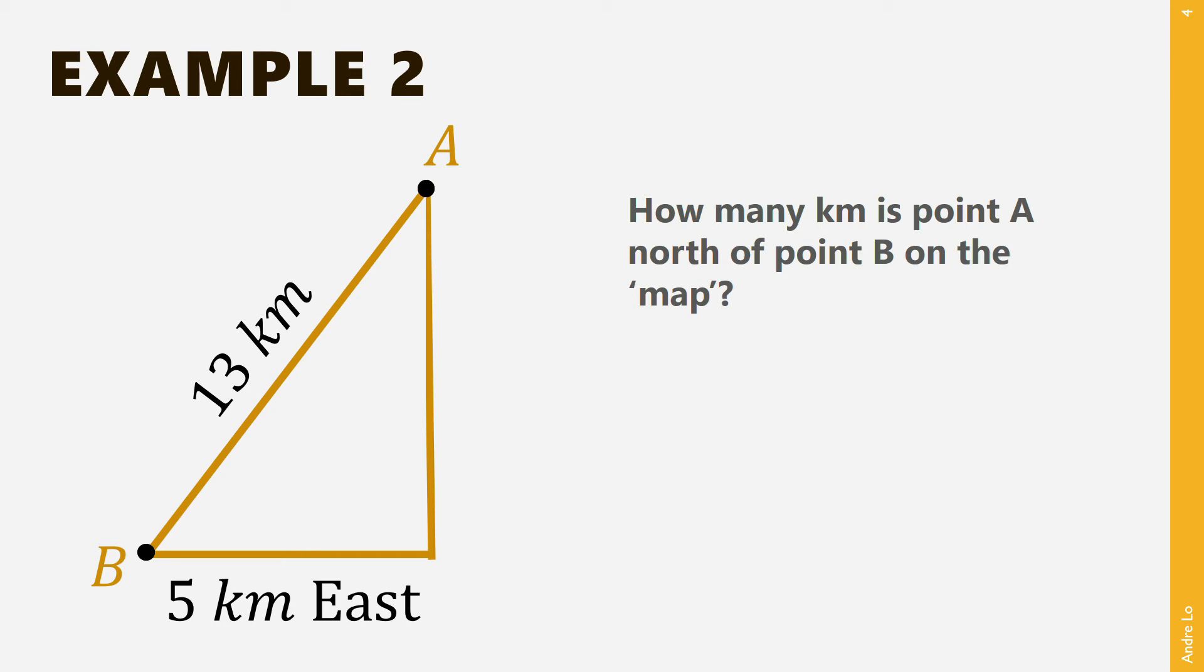Let us call this distance x kilometers. First, notice that as north and east are perpendicular, this forms a right-angled triangle. Because this is a right-angled triangle, we can use Pythagoras' theorem here.